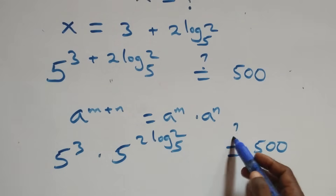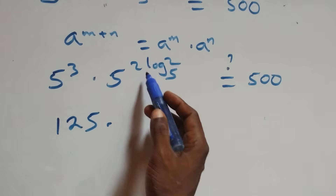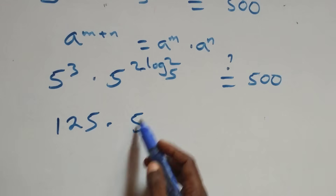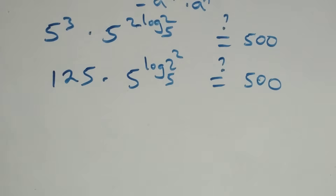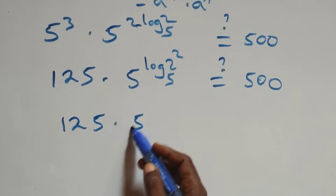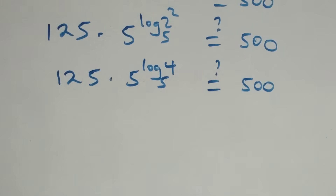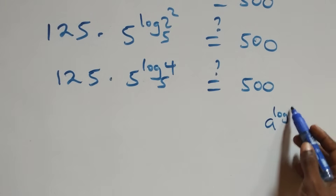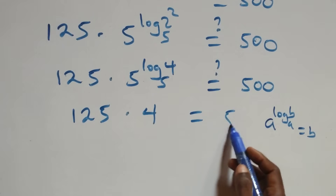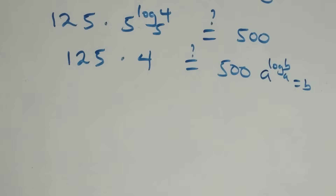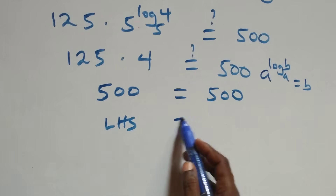We have 5 raised to power 3, which is 5 multiplied by itself 3 times, giving 125. We then rewrite the remaining power using the rule: a raised to power log b base a equals b. So 5 raised to power log 2 squared base 5 gives 4. We have 125 times 4, which equals 500. Left-hand side equals right-hand side.